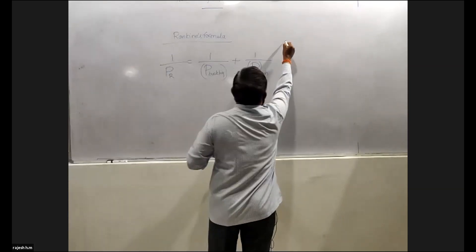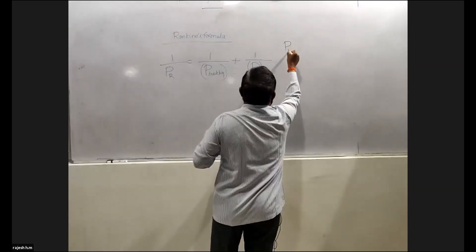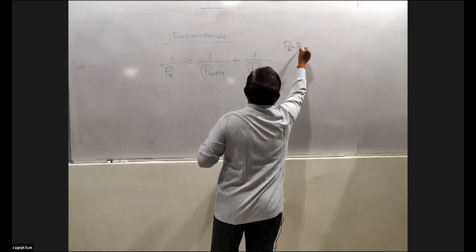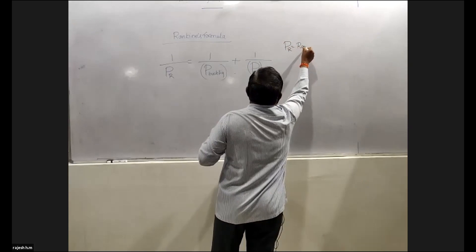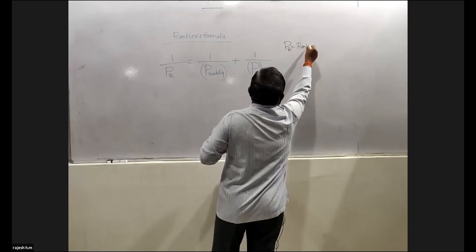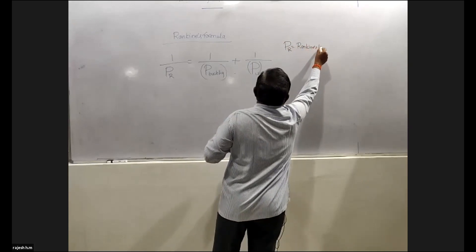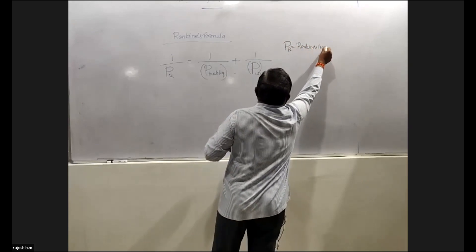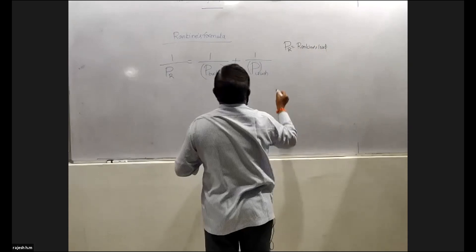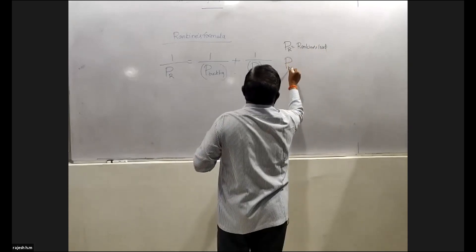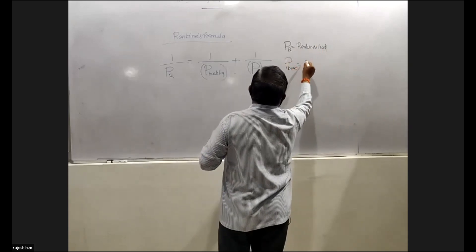Here P_R represents the Rankine load, where 1 divided by P_R equals 1 divided by the buckling load plus 1 divided by the crushing load.